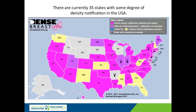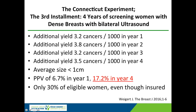Several other provinces are also considering breast density notification, but they need to hear your voices, so speak up. Connecticut has several years of data and they're finding an additional three to four cancers per thousand women year after year — cancers that were missed on mammograms. These are very small cancers. And even though screening ultrasound is covered by insurance in Connecticut, only 30% of eligible women are attending.